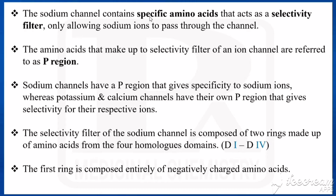The sodium channel has specific amino acids that act as a selectivity filter, only allowing sodium ions to pass through the channel. The amino acids that make up the selectivity filter of the ion channel are called the P region.